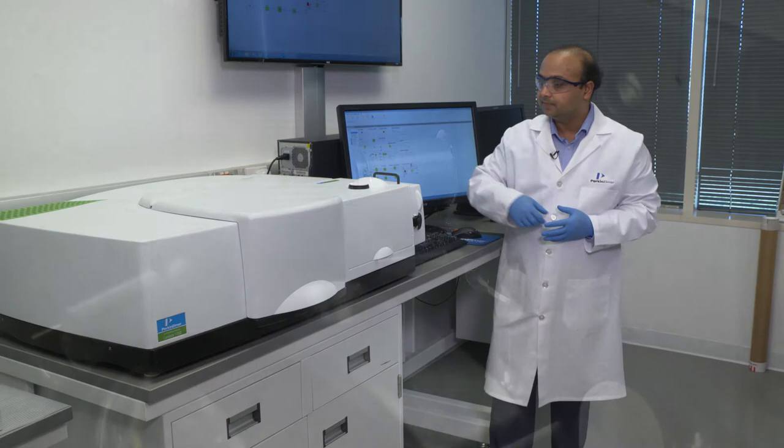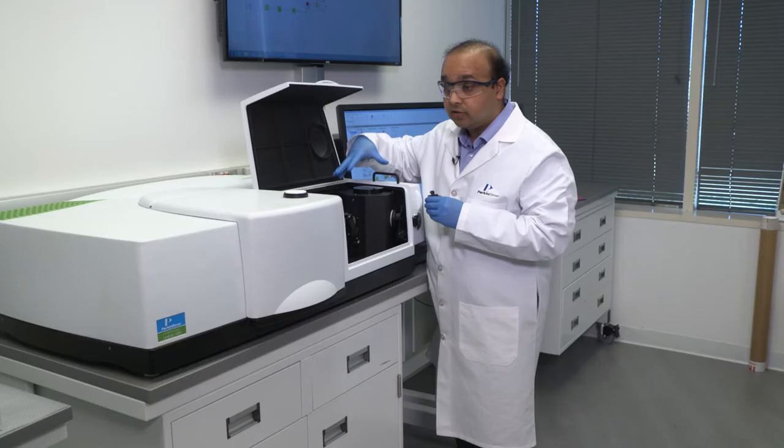And then remove what we call the specular plug on the sphere. Now this specular plug, once we remove this, will allow the reflected signal to be dumped outside the sphere. So whatever then remains inside the sphere is the diffuse reflectance of the particular sample.